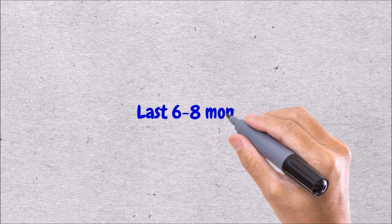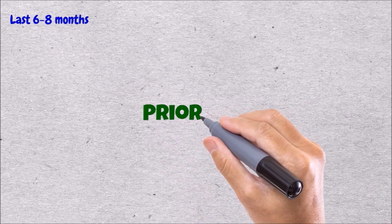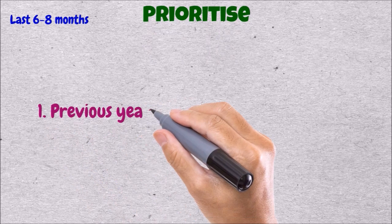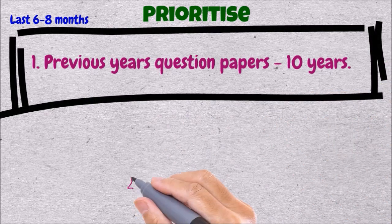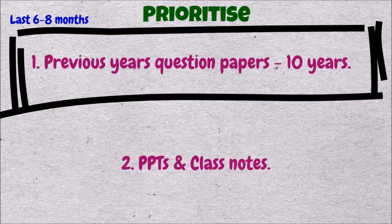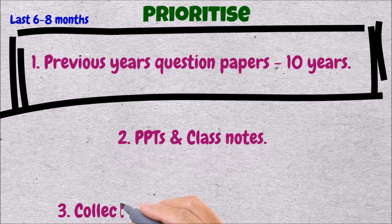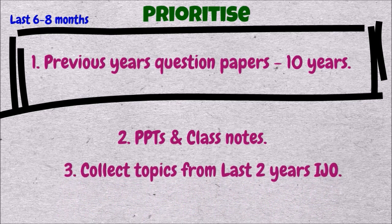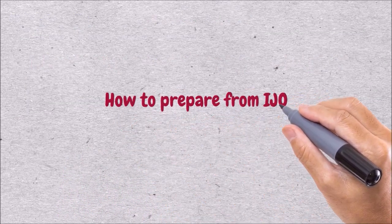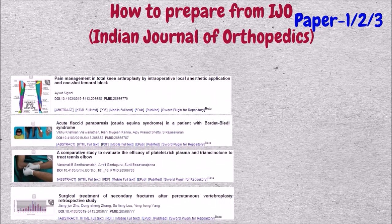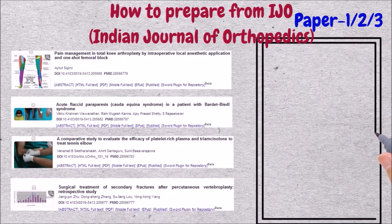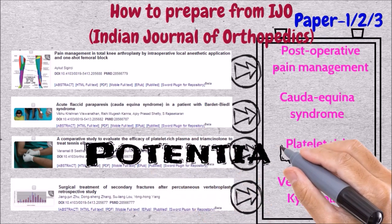Coming to the most important part: how to prepare in the last 6 to 8 months. You need to prioritize things. The first priority should always be previous year's question papers, preferably the last 10 years. Secondly, all the PPTs and class notes collected over the last 3 years. And finally, collect topics from the last 2 years of IJO. For papers 1, 2, and 3, go through the table of contents from IJO as shown in the picture, and then derive potential 5-mark questions from the table of contents.